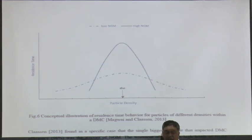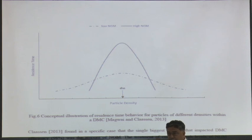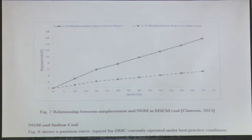He argues that if the percentage of these particles is large, then this phenomenon would be stronger and stronger, but continuously feed is coming. So they may want to stay longer to report to the right product, but they do not get the chance — they are pushed. When they are pushed they can go anywhere, and this is how he says NGM affects the performance of the dense media cyclone. Larger the percentage of NGM in the feed to dense media cyclone, larger is the misplacement, but only in very few cases has this specific relationship been established.